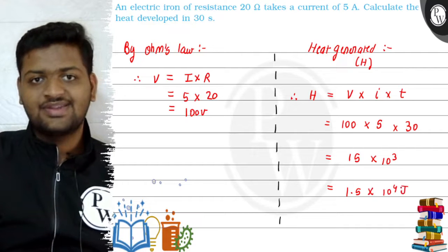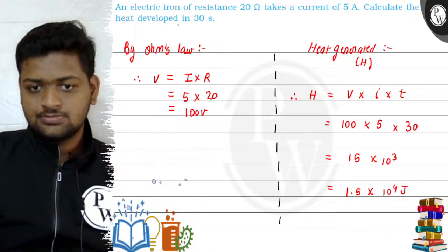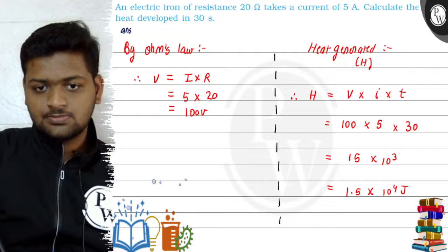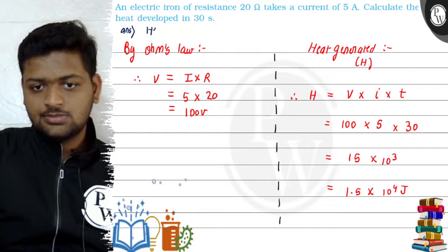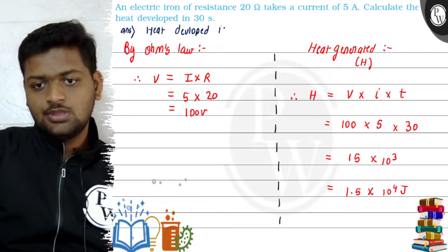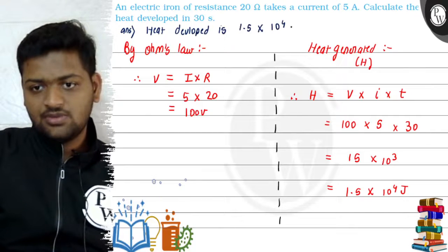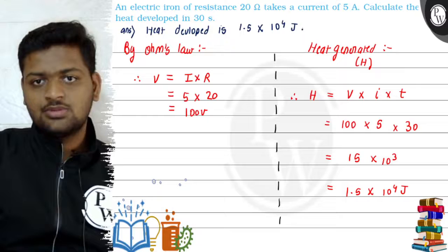So our final answer will be: heat developed is 1.5 into 10 to the power 4 joules. Thank you.